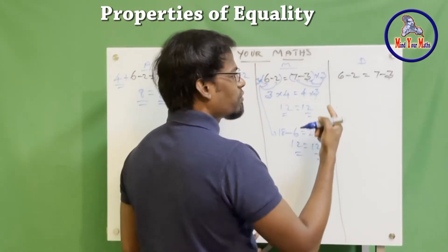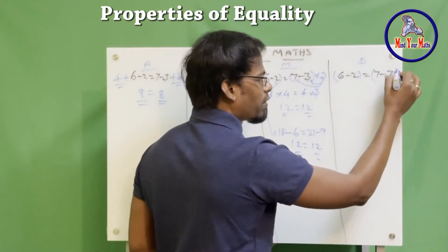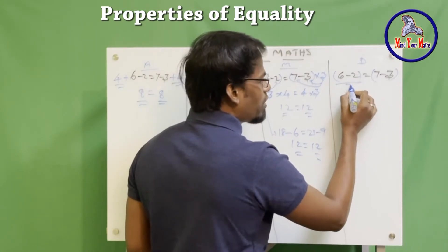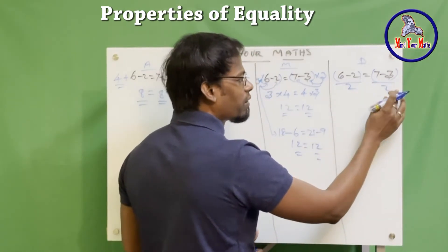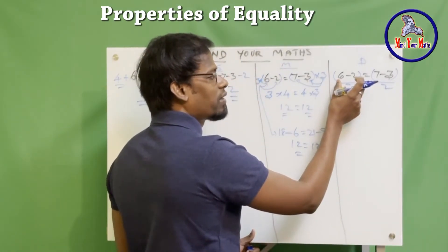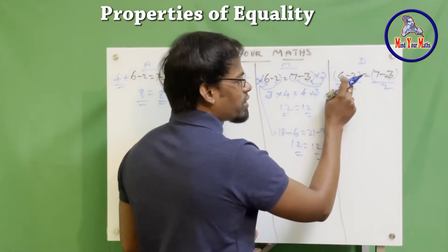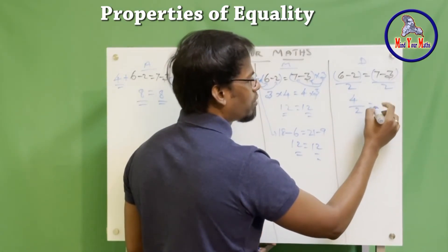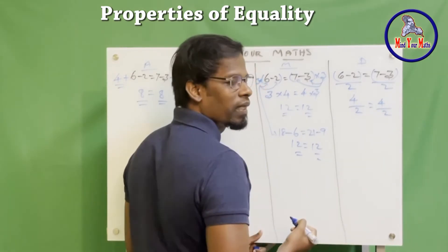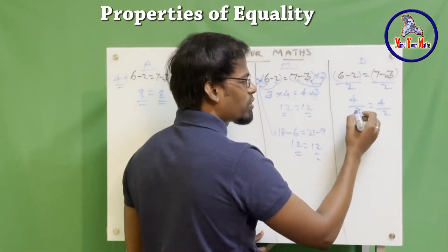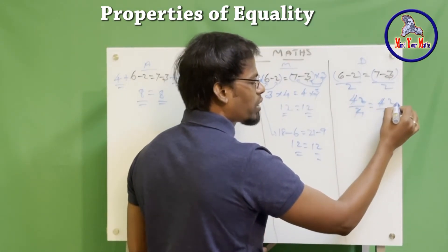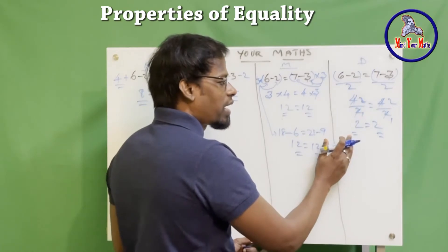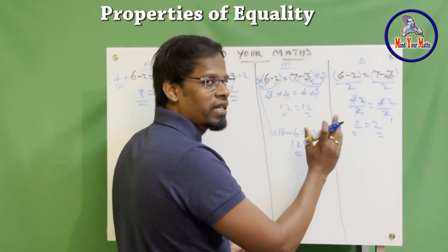Now let's come to division. For division as well, we have to consider the whole left-hand side and the whole right-hand side value. Let's divide by 2 on both sides — the same number on both sides. Simplifying the bracket: 6 minus 2 is 4 over 2, equals 7 minus 3 which is 4 over 2. Simplifying further: 4 over 2 is 2, and 4 over 2 is 2. So 2 equals 2 again — the left-hand side is equal to the right-hand side, and the equality is maintained.